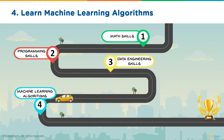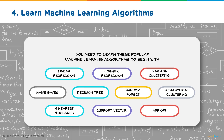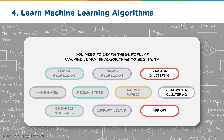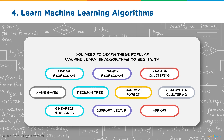Your next step is to learn machine learning algorithms. You can divide them into two categories: supervised and unsupervised machine learning. You can further subdivide them into classification and regression algorithms. All algorithms except linear regression fall under classification, used to determine whether data falls into a particular category. Linear regression falls under regression, used to predict a value. K-means clustering and hierarchical clustering fall under clustering, used to group data based on similar attributes. The Apriori algorithm falls under association, used to determine patterns among variables in large datasets.